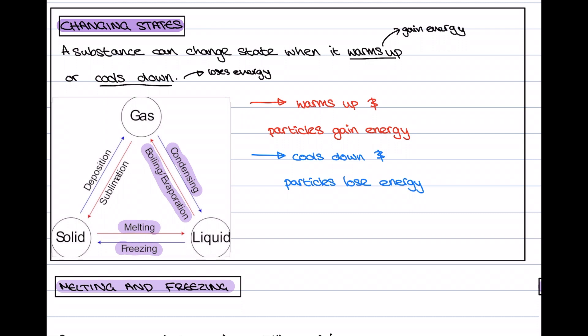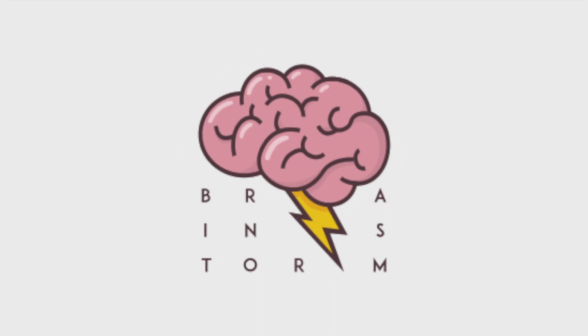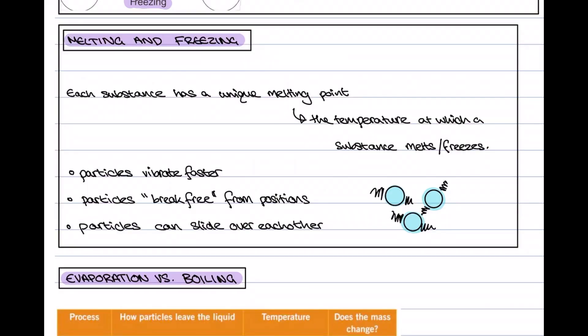One more we're going to touch on briefly is sublimation. Sublimation is when a solid turns straight into a gas without going through the liquid phase. Somewhere you might have seen sublimation is dry ice — you'll see the gas coming off it straight away.